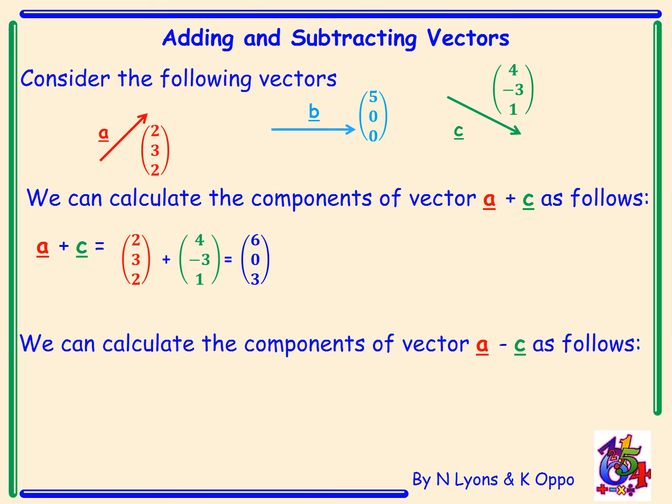We can calculate the components of vector a minus c. A minus c is 2, 3, 2 add negative 4, 3, negative 1. Note that we do a plus negative c, so the components of c have been multiplied by negative 1, as we are adding negative c. 2 plus minus 4 is negative 2, 3 plus 3 is 6, and 2 plus negative 1 is 1.